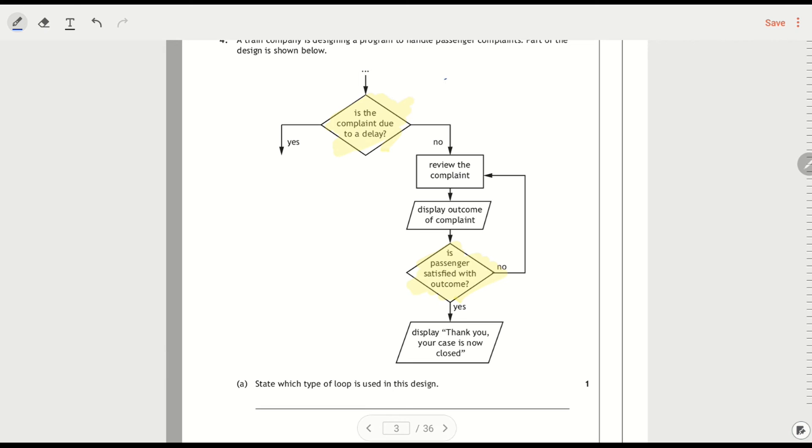So this thing here, program starts, and effectively this is an if, right? It's going one way or the other. Is the complaint due to a delay? So if it's no, then they're going to review the complaint, display the outcome. Is the passenger satisfied? So we've got another decision being made, but this one, it's either going on forwards, or it's going back, and it would repeat again. So they would end up going back, and going back, and going back, and they may have to do this several times. So that is the loop.